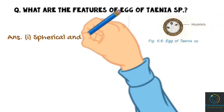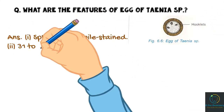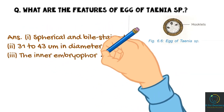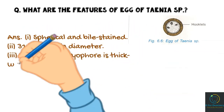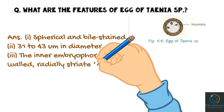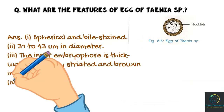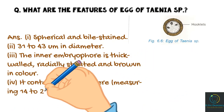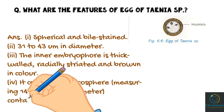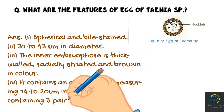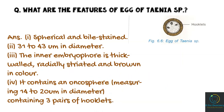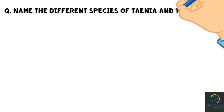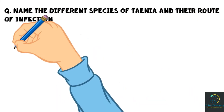What are the features of the egg of Taenia species? Answer: Spherical and bile-stained, 31 to 43 micrometers in diameter. The inner embryophore is thick-walled, radially striated, and brown in color. It contains an oncosphere measuring 14 to 20 micrometers in diameter, containing three pairs of hooklets.